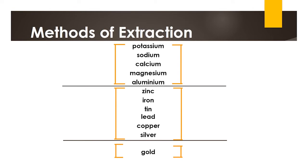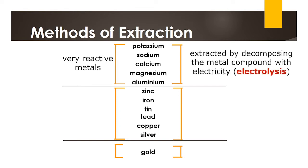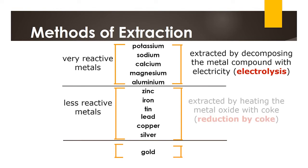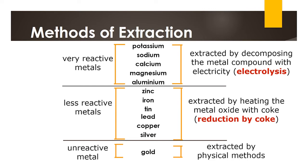The reactivity series helps determine the best extraction method. We categorize it into three groups: very reactive metals (potassium, sodium, calcium, magnesium, aluminum), less reactive metals, and unreactive metals. For very reactive metals the method is more vigorous; for unreactive metals it is more straightforward. Very reactive metals require electrolysis, less reactive metals use reduction by coke, and unreactive metals can be extracted by physical methods.